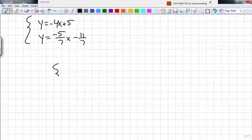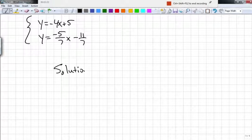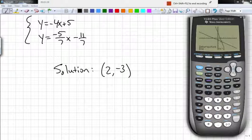So the solution to this particular system is 2 comma negative 3. And that's what the graph screen looks like.